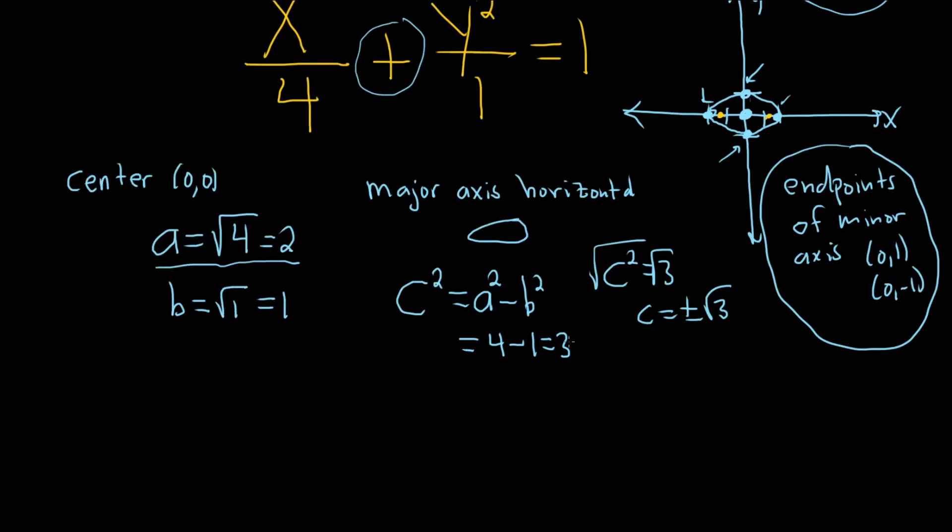So the foci in this case would be negative root 3, 0, and then root 3, 0. These would be the foci, plural for focus. And there's two of them. There's one here and there's one here. You know the x has the c because it's on the major axis. So that's why you know to put the c as the x-coordinate.